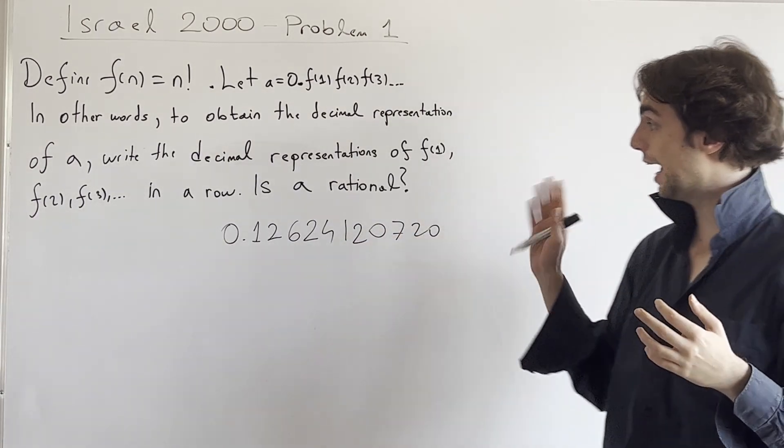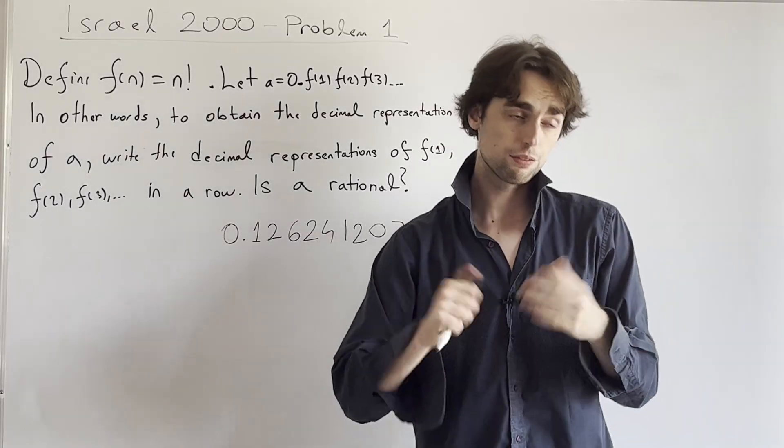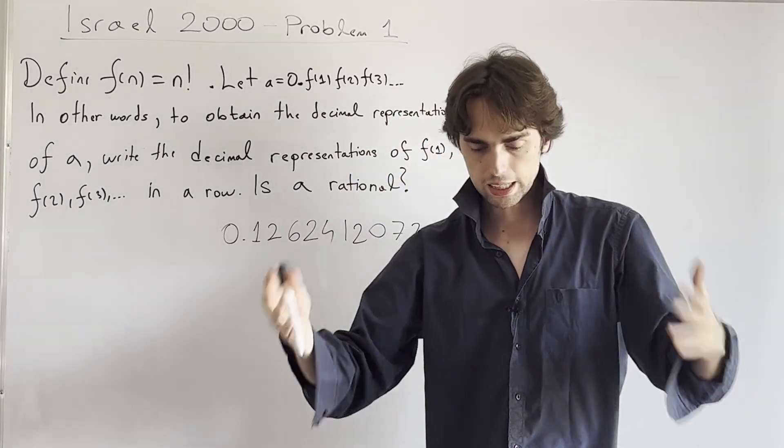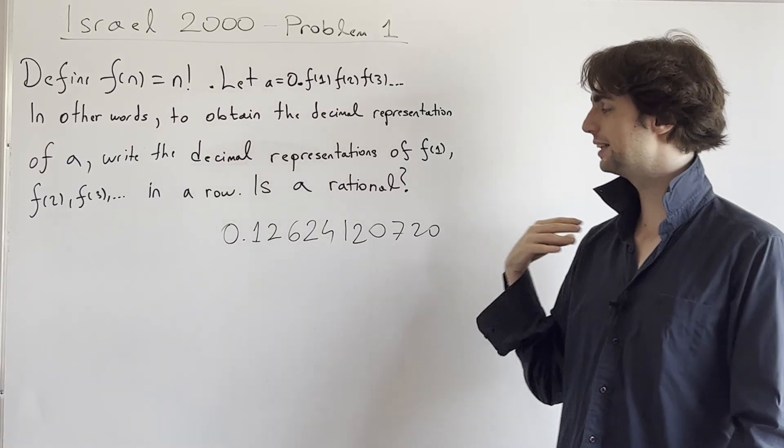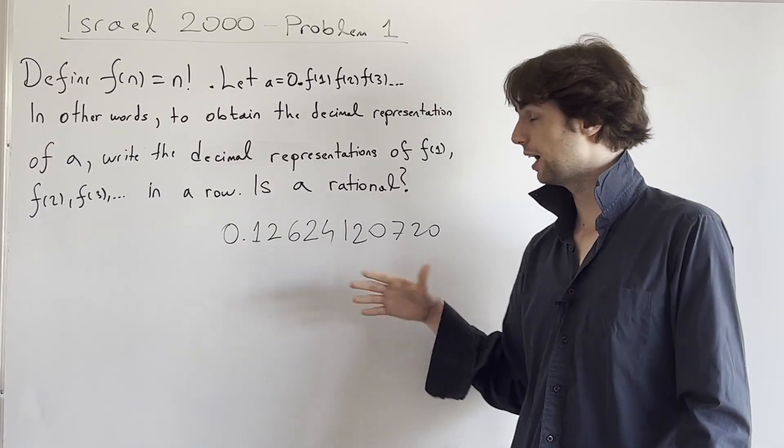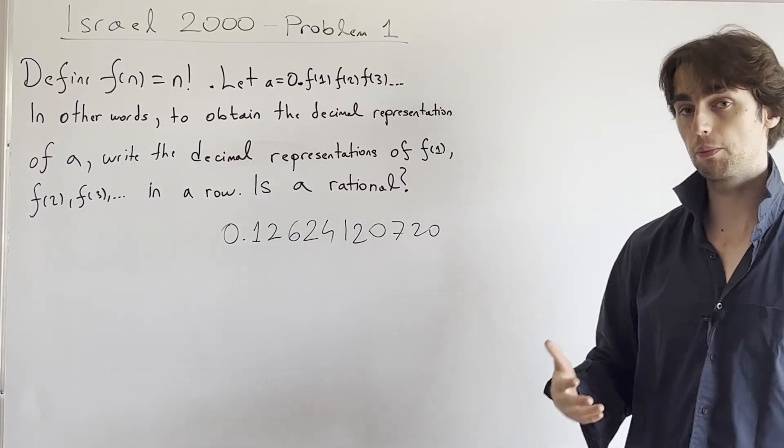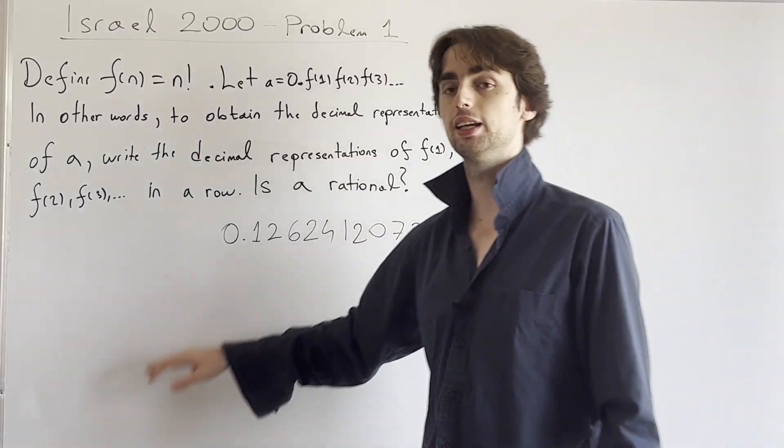And we must determine whether or not A is rational. So first question, what would it mean if A was rational? What would that necessitate to be true about the decimal representation here of A? What would that mean?